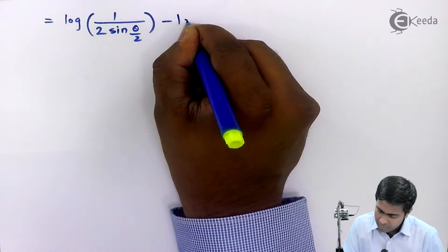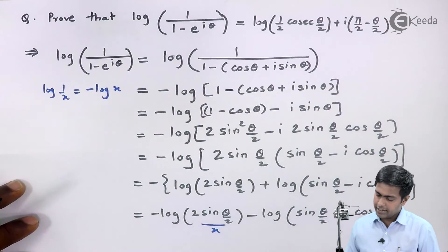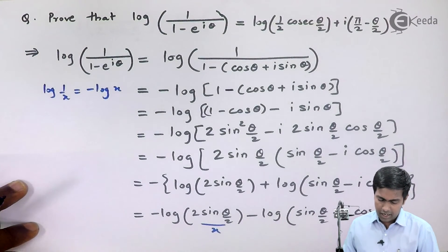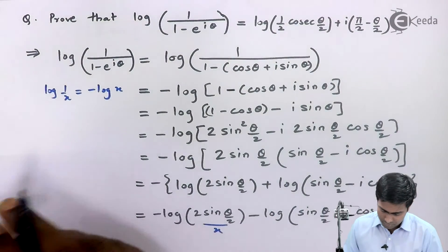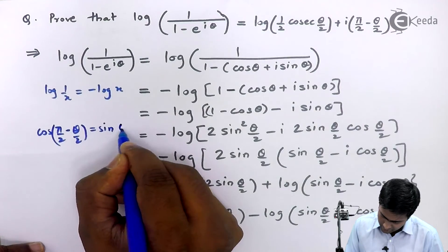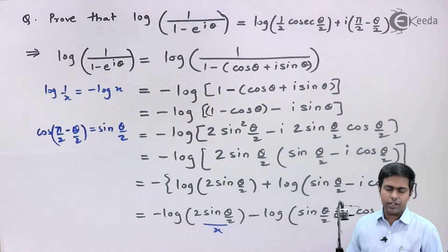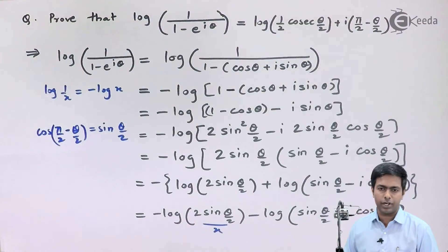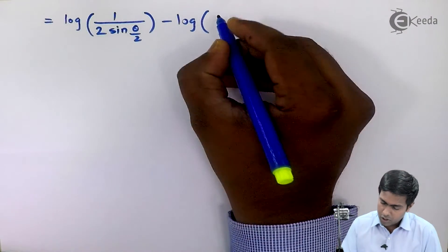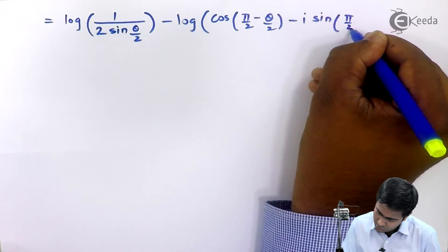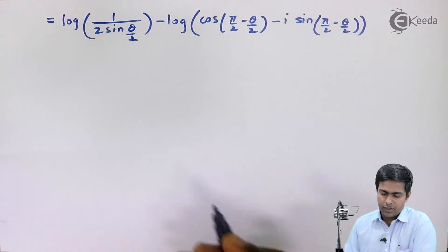For the second term, log of sin(θ/2) minus i·cos(θ/2), we convert it to standard complex form. To turn sin into cos and cos into sin we use the identities: sin(θ/2) equals cos(π/2 minus θ/2), and cos(θ/2) equals sin(π/2 minus θ/2). Substituting, this becomes log of cos(π/2 minus θ/2) minus i·sin(π/2 minus θ/2).